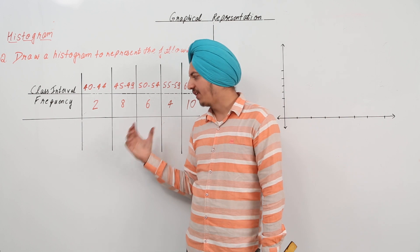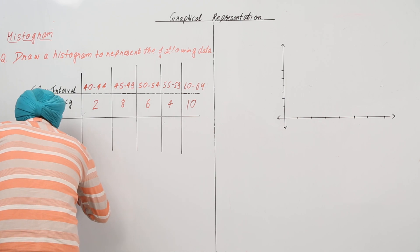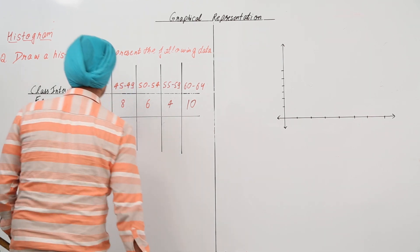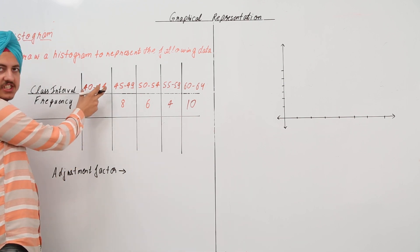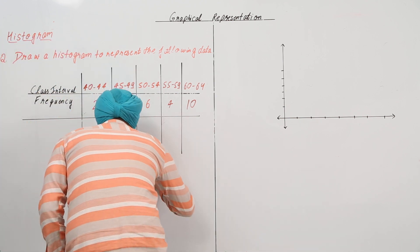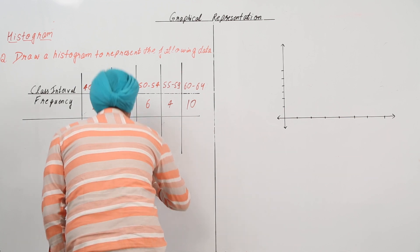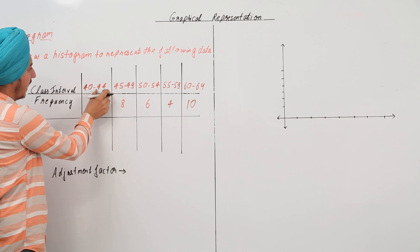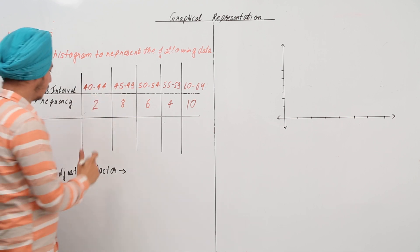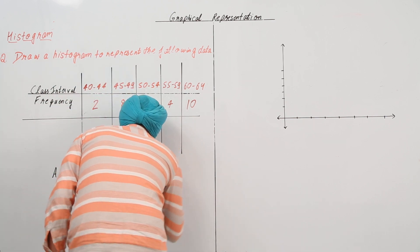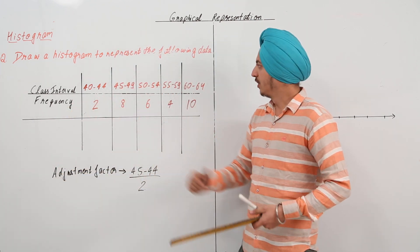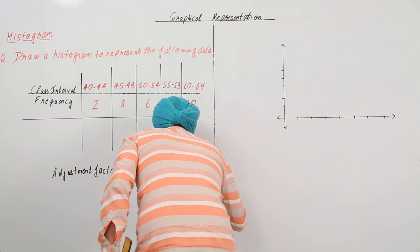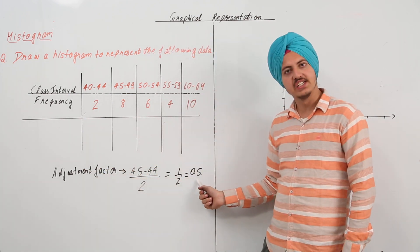What do we do in this case? We find a thing called the adjustment factor. What is this adjustment factor? We take the lower limit of the second class interval and subtract the upper limit of the first class interval, then divide it by 2. So, this is 45 minus 44 divided by 2, which equals 1/2, which is equal to 0.5. The adjustment factor is 0.5.